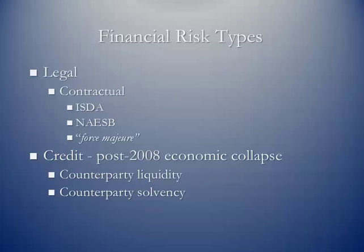Credit risk goes along with counterparty liquidity issues. In the post-2008 economic collapse, banks had entered the marketplace after Enron and others exited, providing financial liquidity. As banks exited the business over the last several years, that has impacted counterparty liquidity — there are fewer partners with which you can get financial derivatives executed, impacting hedging. There is also counterparty solvency risk: a company you're trading with or executing hedge positions through may suddenly become insolvent, raising the question of what happens to your positions.